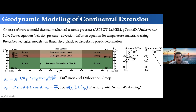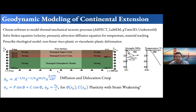Typically we prescribe a non-linear viscoplastic or viscoelastic-plastic constitutive relationship. In a typical setup you prescribe velocities to drive extension, inflow at the base, and different lithologies with different density, thermodynamic, and rheological properties. Within this, the rheology for the viscoplastic case is prescribed by some combination of diffusion creep, dislocation creep, and plasticity. This combination gives us different strength profiles as a function of temperature and strain rate. Plasticity is described with a Drucker-Prager yield criterion where yield stress is a combination of pressure, friction coefficient, and cohesion.